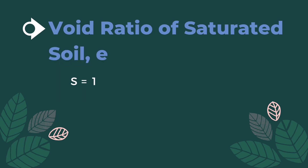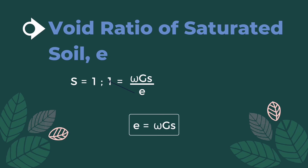Next is the void ratio of saturated soil. Assuming S equals 1 and using the formula of degree of saturation: 1 equals moisture content times specific gravity divided by void ratio. Transposing void ratio to the other side gives us the simplified formula: void ratio of saturation equals moisture content times specific gravity.